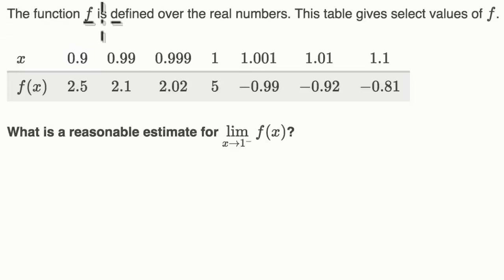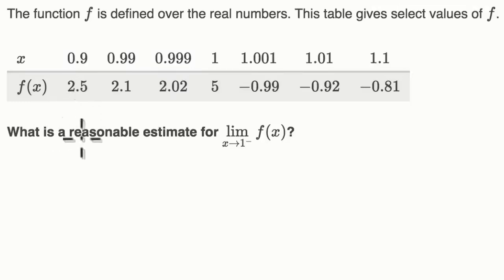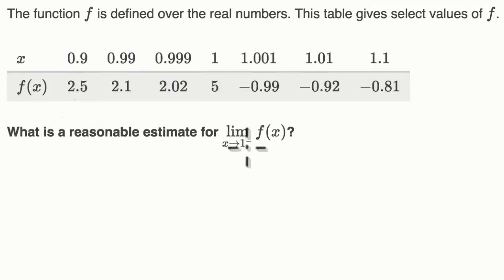The function f is defined over the real numbers. This table gives select values of f for these x values and their corresponding f of x. What is a reasonable estimate for the limit of f of x as x approaches one from the left? Pause this video and see if you can figure it out on your own.